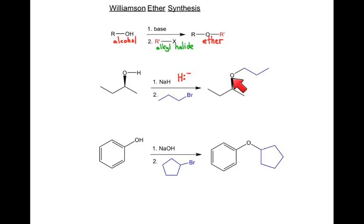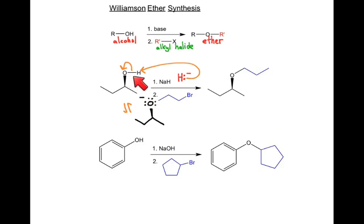Let's go through this mechanism — it's fairly simple. NaH gives you Na+ and H−. The H− is a very good base, so it's going to deprotonate the hydrogen on your alcohol, producing an alkoxide. The stereochemistry is maintained. This oxygen now has an extra lone pair and a negative charge. What we've created is a really good nucleophile — the alcohol by itself is not a great nucleophile, but when we deprotonate it to form the alkoxide, it becomes a very good nucleophile.